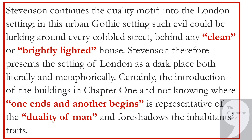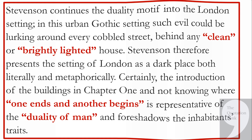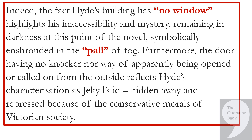Stevenson continues the duality motif into the London setting. In this urban Gothic setting, such evil could be lurking around every cobbled street, behind any clean or brightly lighted house. Stevenson therefore presents the setting of London as a dark place both literally and metaphorically. Certainly, the introduction of the buildings in chapter one, and not knowing where one ends and another begins, is representative of the duality of man and foreshadows the inhabitants' traits. Indeed, the fact Hyde's building has no window highlights his inaccessibility and mystery, remaining in darkness at this point of the novel, symbolically enshrouded in the pall of fog.